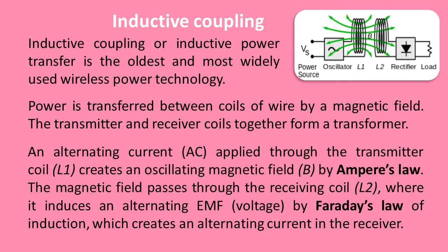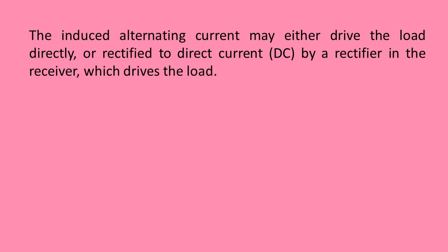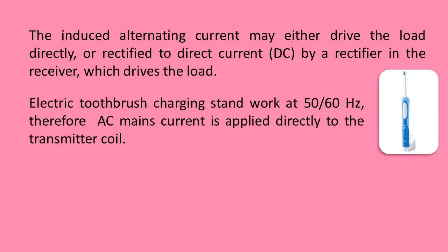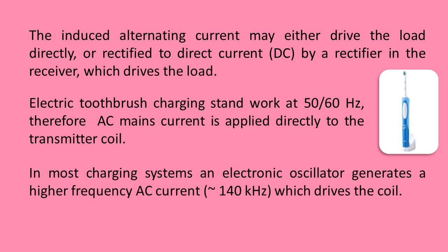An alternating current (AC) applied through the transmitter coil L1 creates an oscillating magnetic field by Ampere's law. The magnetic field passes through the receiver coil, where it induces an alternating EMF voltage by Faraday's law of induction, which creates an alternating current in the receiver. The induced alternating current may either drive the load directly or be rectified to direct current (DC) by a rectifier in the receiver. Electric toothbrush charging stands work at 50 or 60 Hz, so AC mains current is applied directly to the transmitter coil.